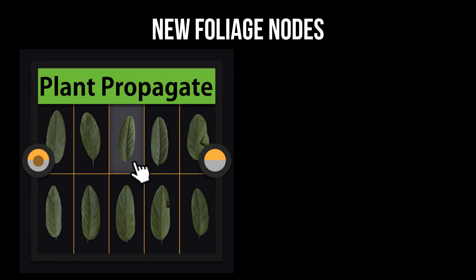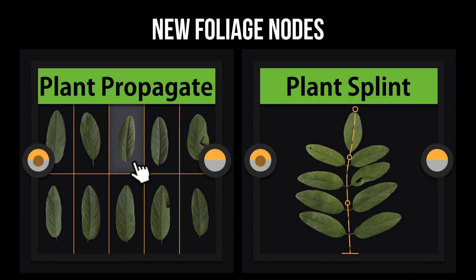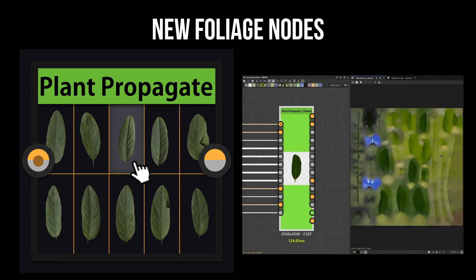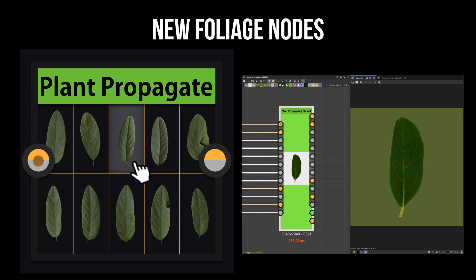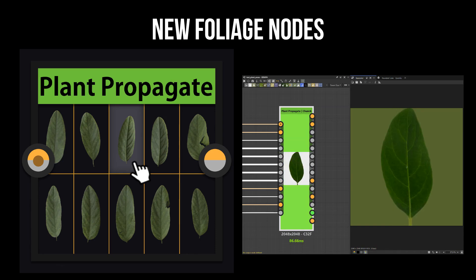I just wanted to announce two more nodes I've made for Substance Designer: the Plant Propagate and the Plant Splint nodes. They're going to help continue facilitating foliage art workflows within Substance Designer. We're going to take a look at what both of those nodes do more specifically, but kind of an overview: the Plant Propagate allows you to input an atlas that's already been created and essentially separate out an individual cutout from that atlas.